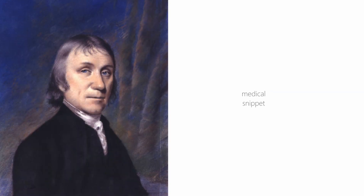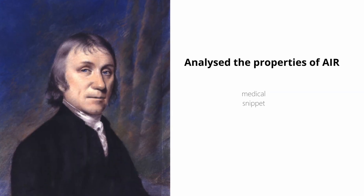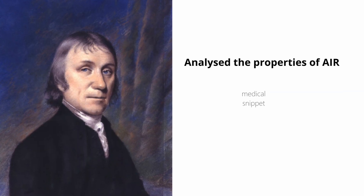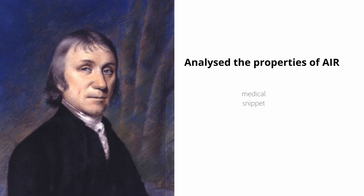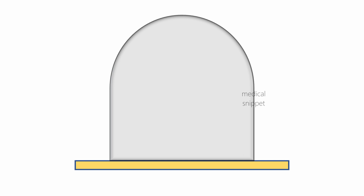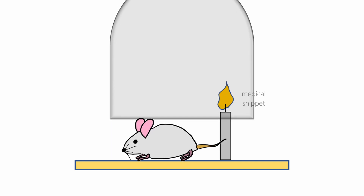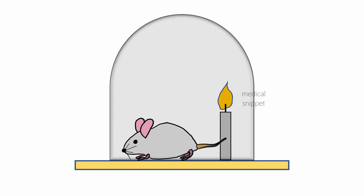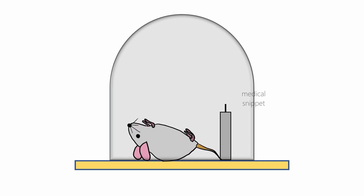Joseph Priestley analyzed the properties of air using a famous experiment. He used an inverted container on a raised platform. He showed that a flame went out when placed in the inverted container, and also, the mouse would die due to lack of air.